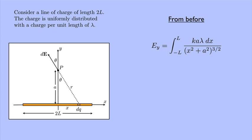From symmetry, we were able to rewrite that as the integral from 0 to L and multiply it by 2, and then pull out the constants. We ended up getting 2K lambda L divided by a times the square root of L squared plus a squared.